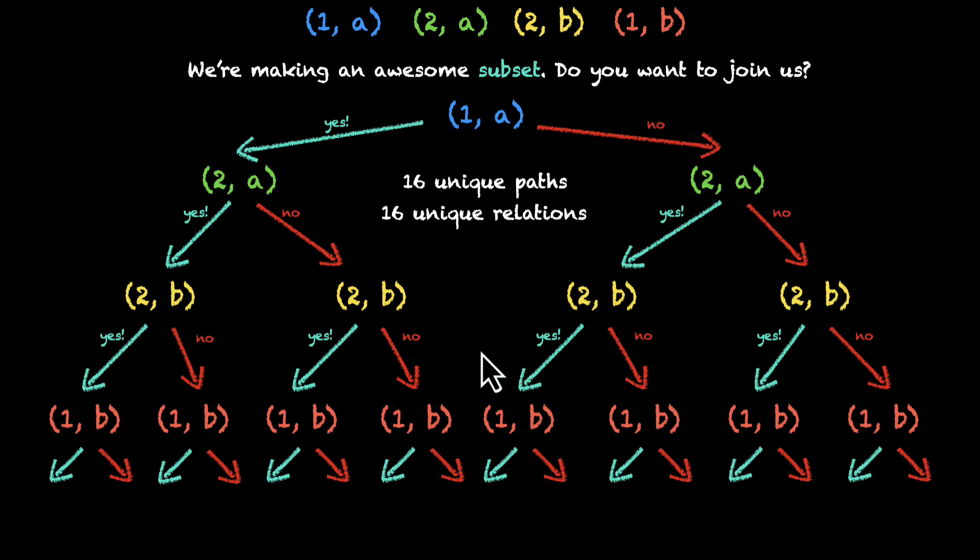Here's a closer look. Let's look at one particular path. Let's say we have this one. If we backtrack, which elements are part of this relation? So 1A said yes, 2A said no, 2B said no, and 1B said yes. So this relation has 1A and 1B. That's it. This is a unique relation. No other path will have just 1A and 1B.